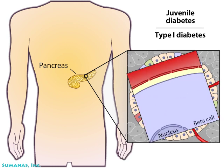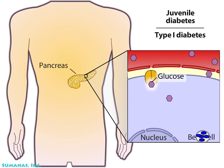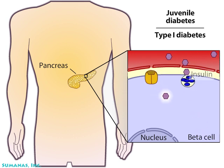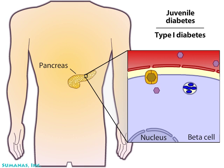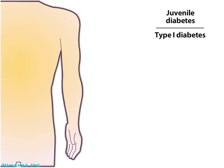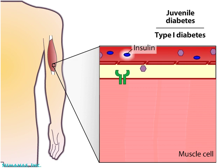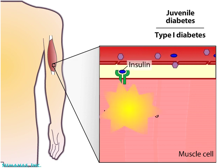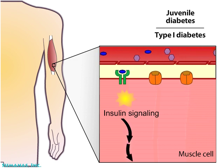Beta cells function in the following way. After a meal, glucose increases in the bloodstream. Beta cells detect this glucose and release insulin into the bloodstream. Insulin then circulates throughout the body, targeting many tissues including muscle cells. Insulin binds to receptors on muscle cells, signaling the cells to take in glucose, and the cell responds by increasing the transport of glucose into the cell.